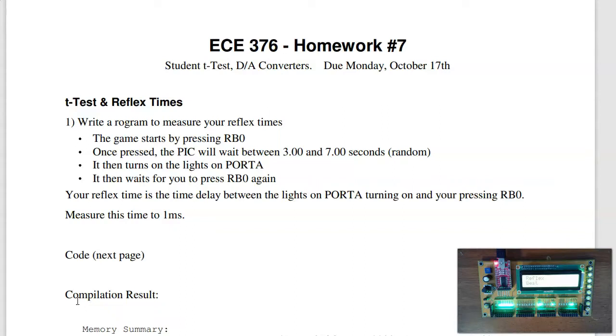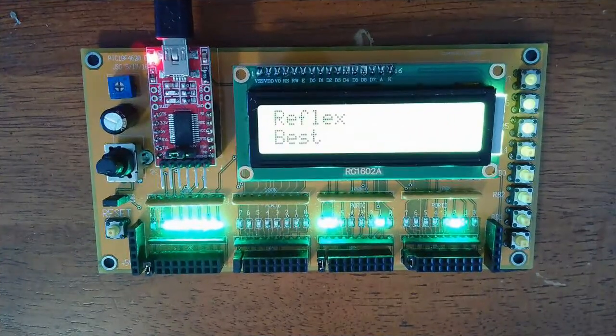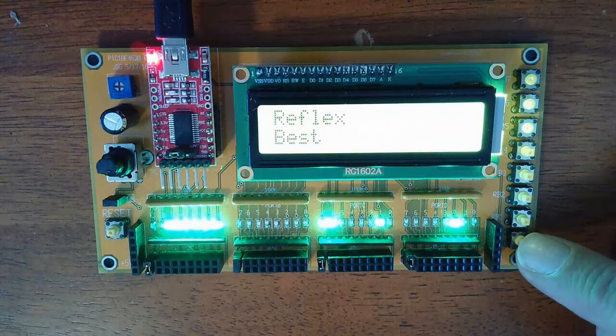The first problem is to measure your reflex time. So in order to use a t-test, we need to collect some data. Let's have some fun and measure my reflex time. Here's the idea: I'm going to push RB0, that starts the game.